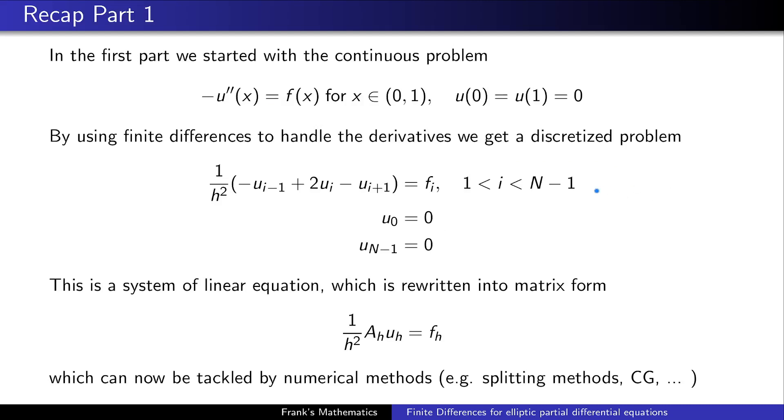In the first part, we started with the continuous problem. The negative second derivative of a function u should equal a function f inside a given domain. And on the boundary, we have fixed values, so u(0) should be u(1) should be 0.